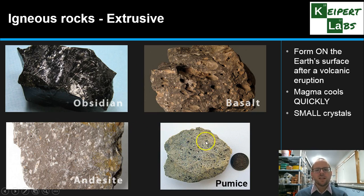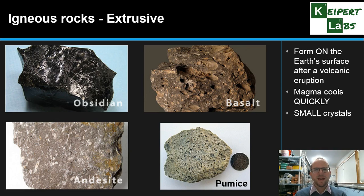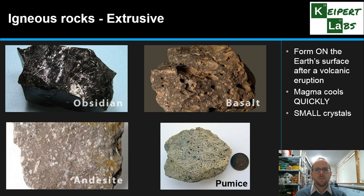Pumice tends to form when we get an explosive volcanic eruption where lots of gas forms and gets trapped into the structure — a bit like making honeycomb, where bubbles of gas get trapped and hardened as it sets, making it very light.